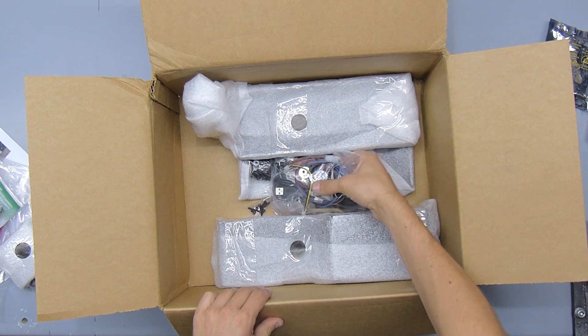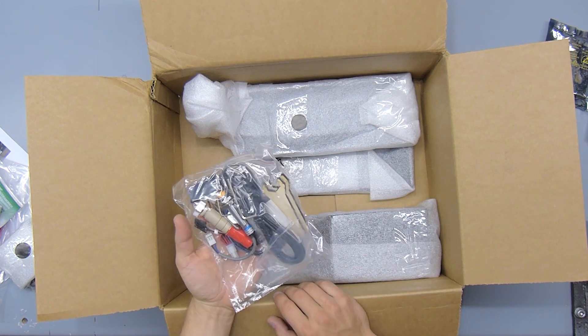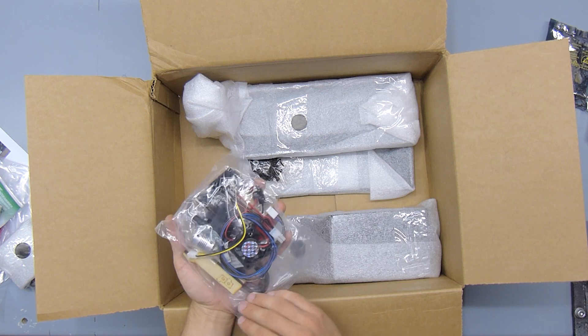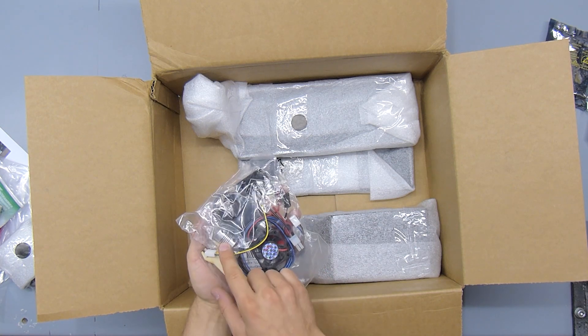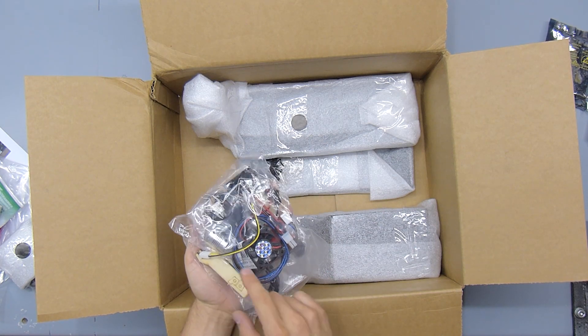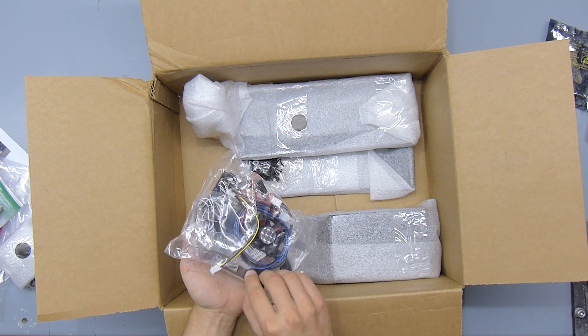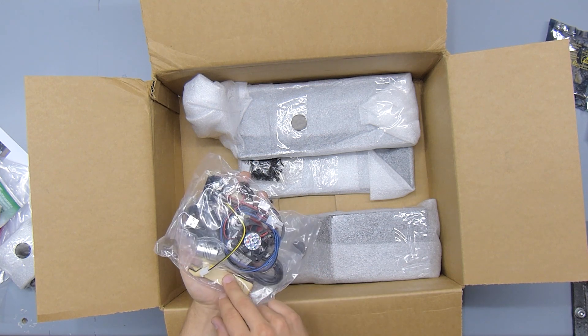Then a big fat bag with all kinds of miscellaneous stuff. So in here we have the fan for the hotend, we have the Z coupler, we have two laser-cut wooden wrenches for the Z end stop sensor probe.